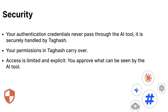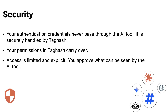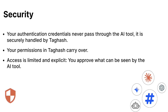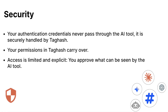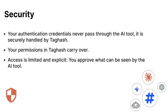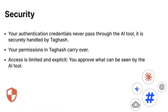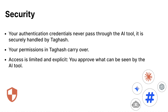We know what's at stake — this is sensitive and strategic information. That's why Tagash roles and permissions stay intact, so your colleague will not be able to access any information through MCP that they would otherwise not be able to access in Tagash. Access is explicit — you decide what your AI can use.